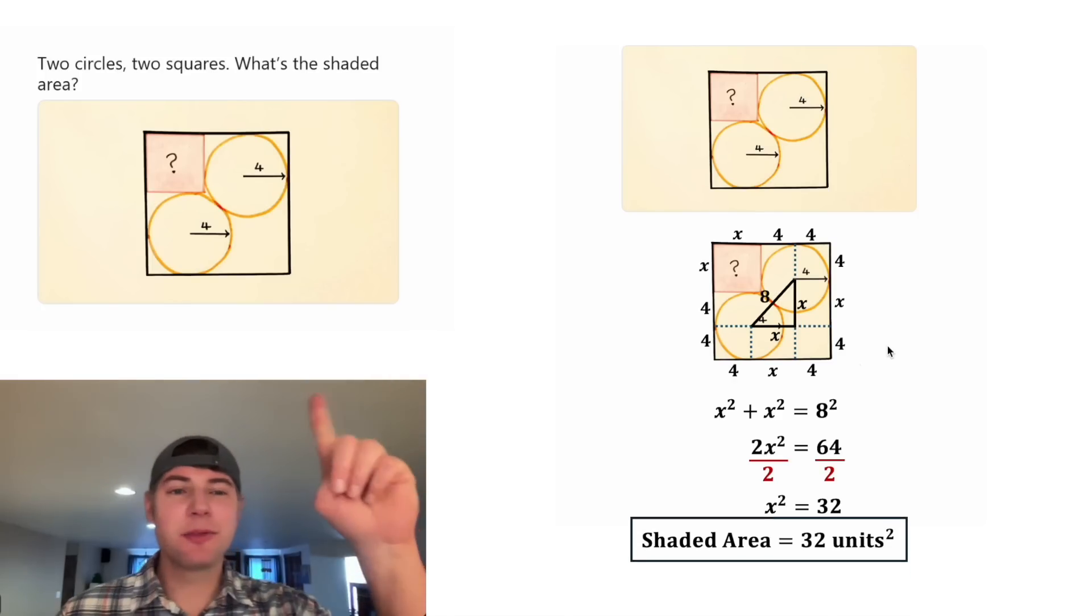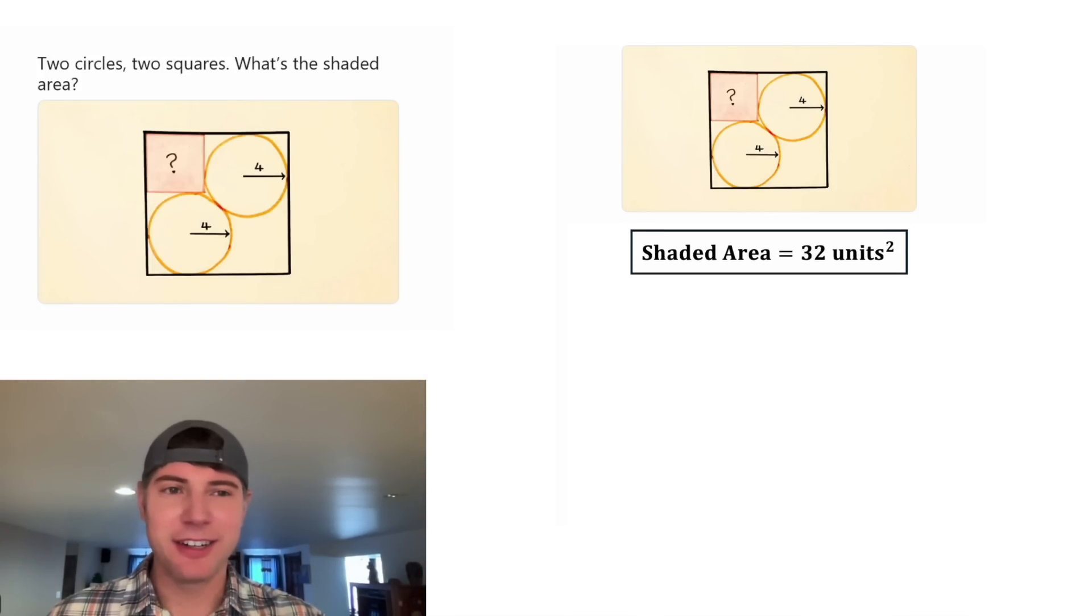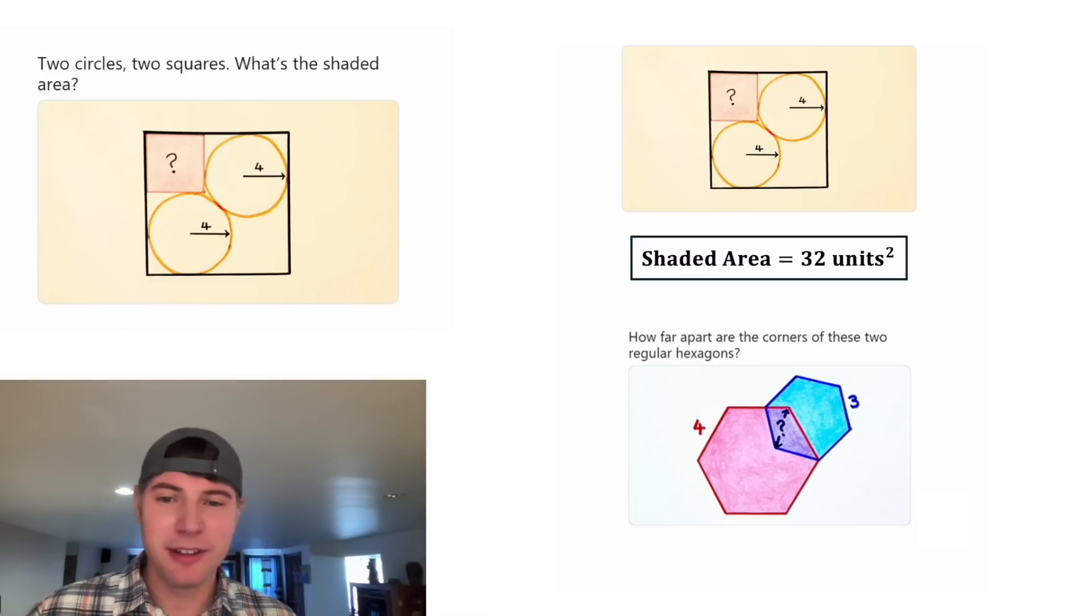How exciting. This was day four of our AgVENT calendar. This one is going to be day five. It says how far apart are the corners of these two regular hexagons. So they're both hexagons. They're different sizes, and it wants to know how far apart are these. I guess we'll find out tomorrow how that works.